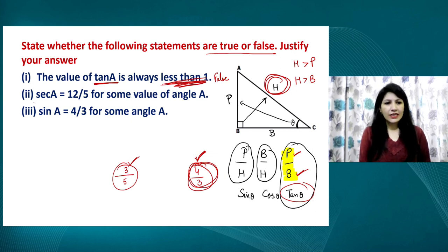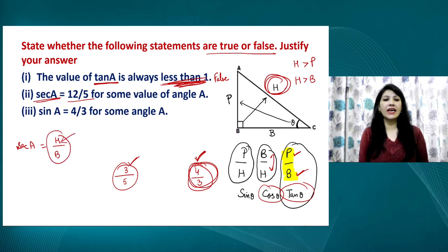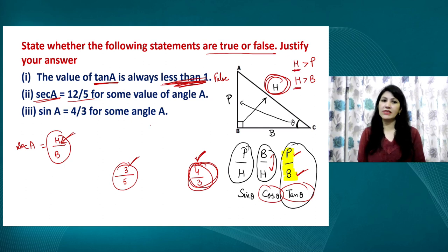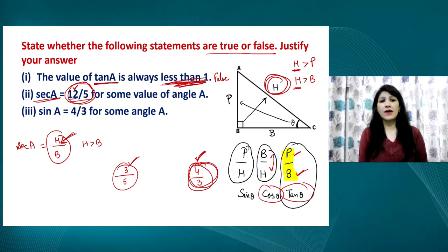The next statement is: sec A equals 12 upon 5. We know that sec is the reciprocal of cos theta, so sec A equals hypotenuse upon base. The numerator is the hypotenuse, which is always the longest side — always greater than the denominator. Since hypotenuse 12 is greater than base 5, this statement is TRUE.